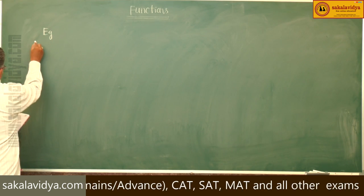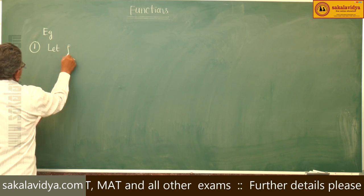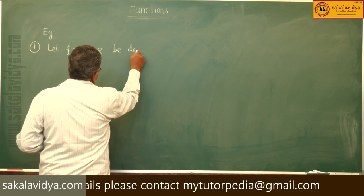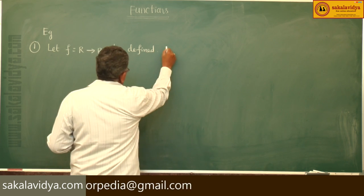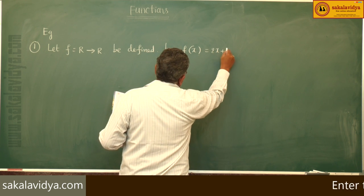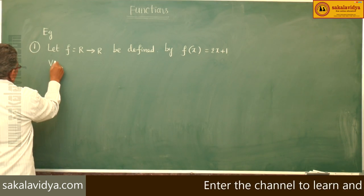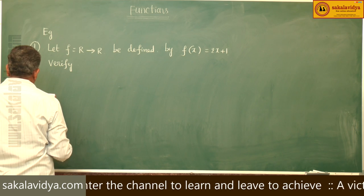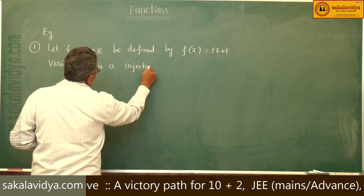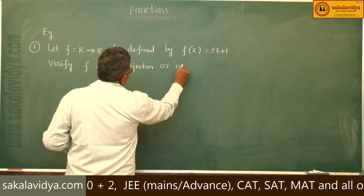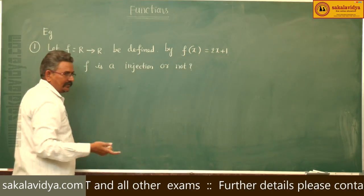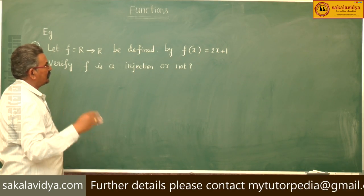First example: Let f maps R to R be defined by f(x) equals 2x plus 1. Verify if f is an injection or not. We have to justify our answer. This function f(x) = 2x + 1 is given, whether this function is an injection or not we have to check.